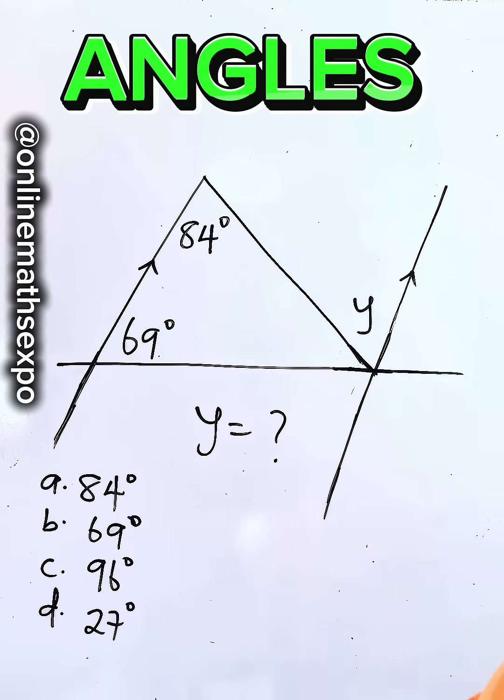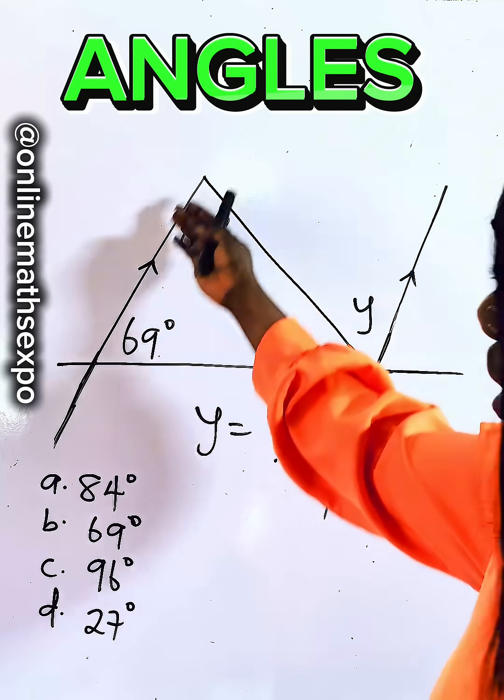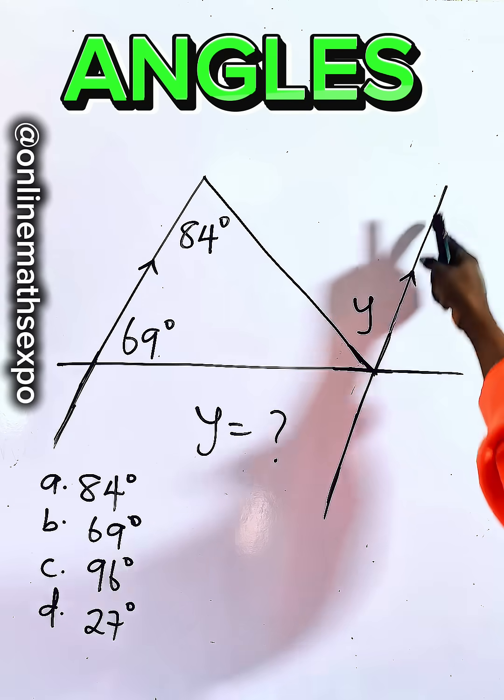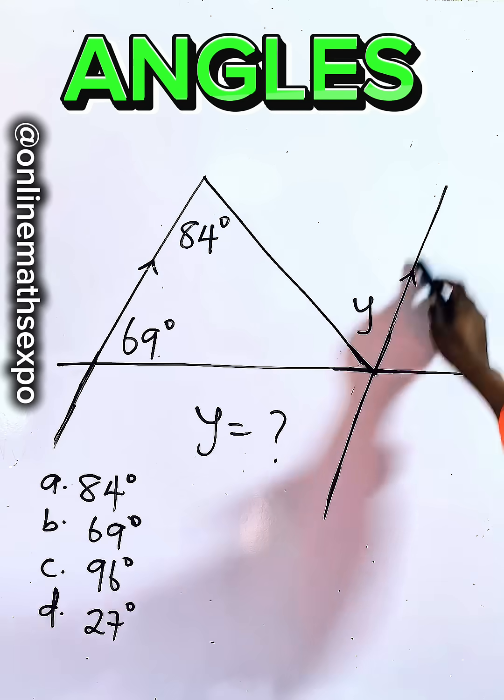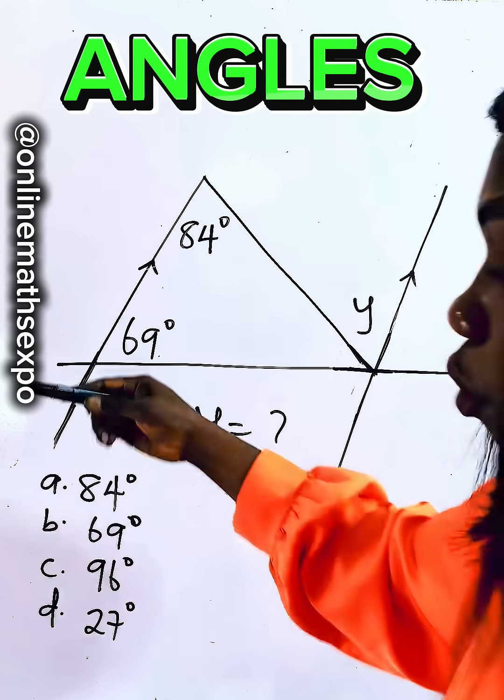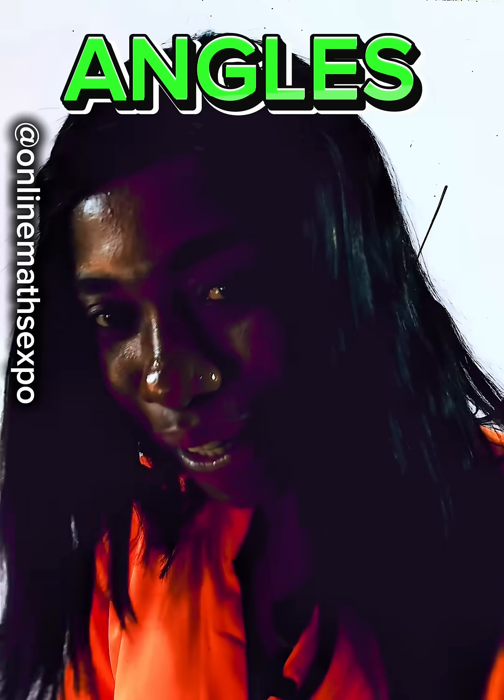How do you answer this question on angles? Now look at this carefully. You see that in this line drawn, this arrow here shows you that these two lines are parallel. And when lines are parallel, it talks about a lot of angles.